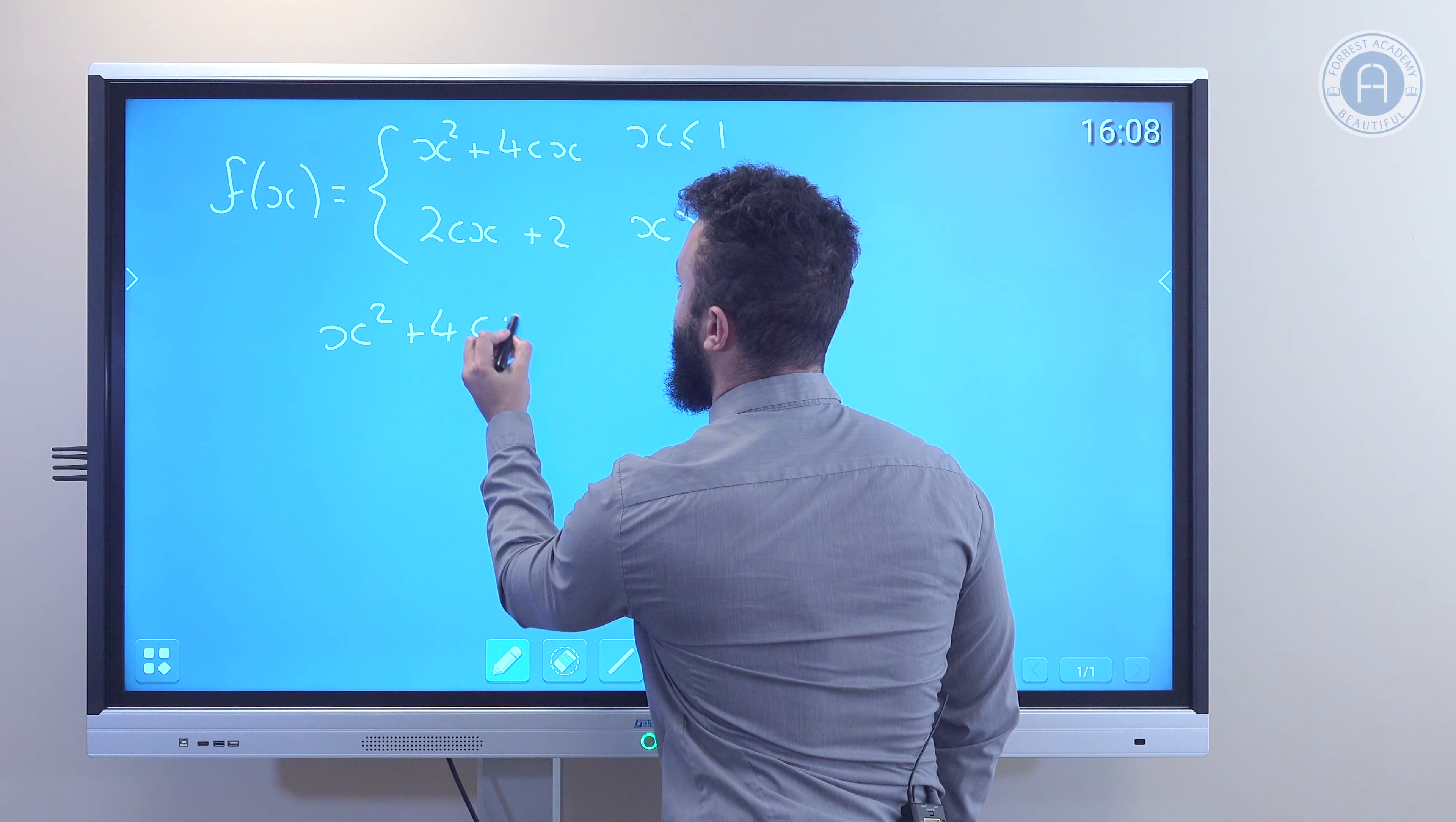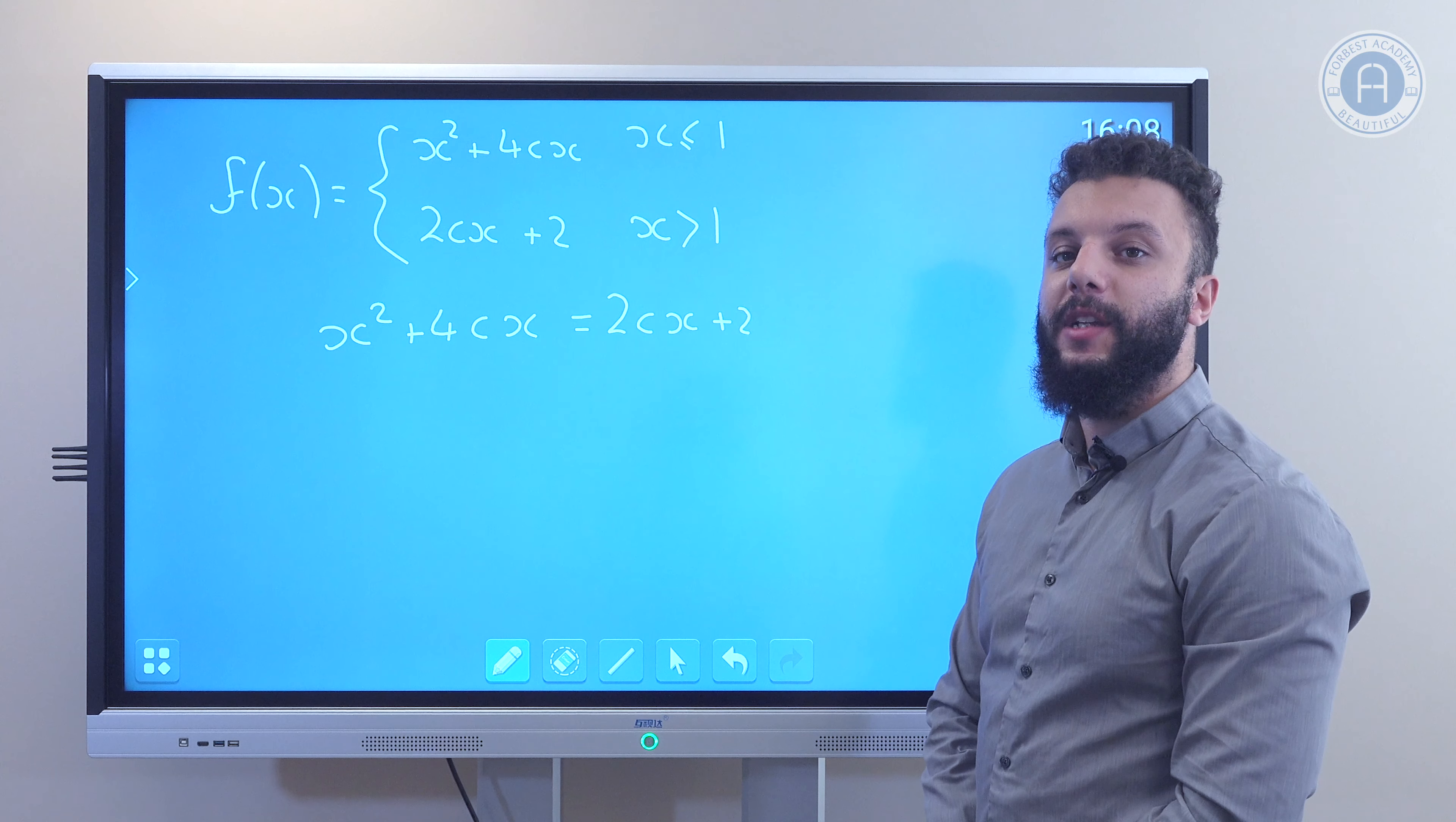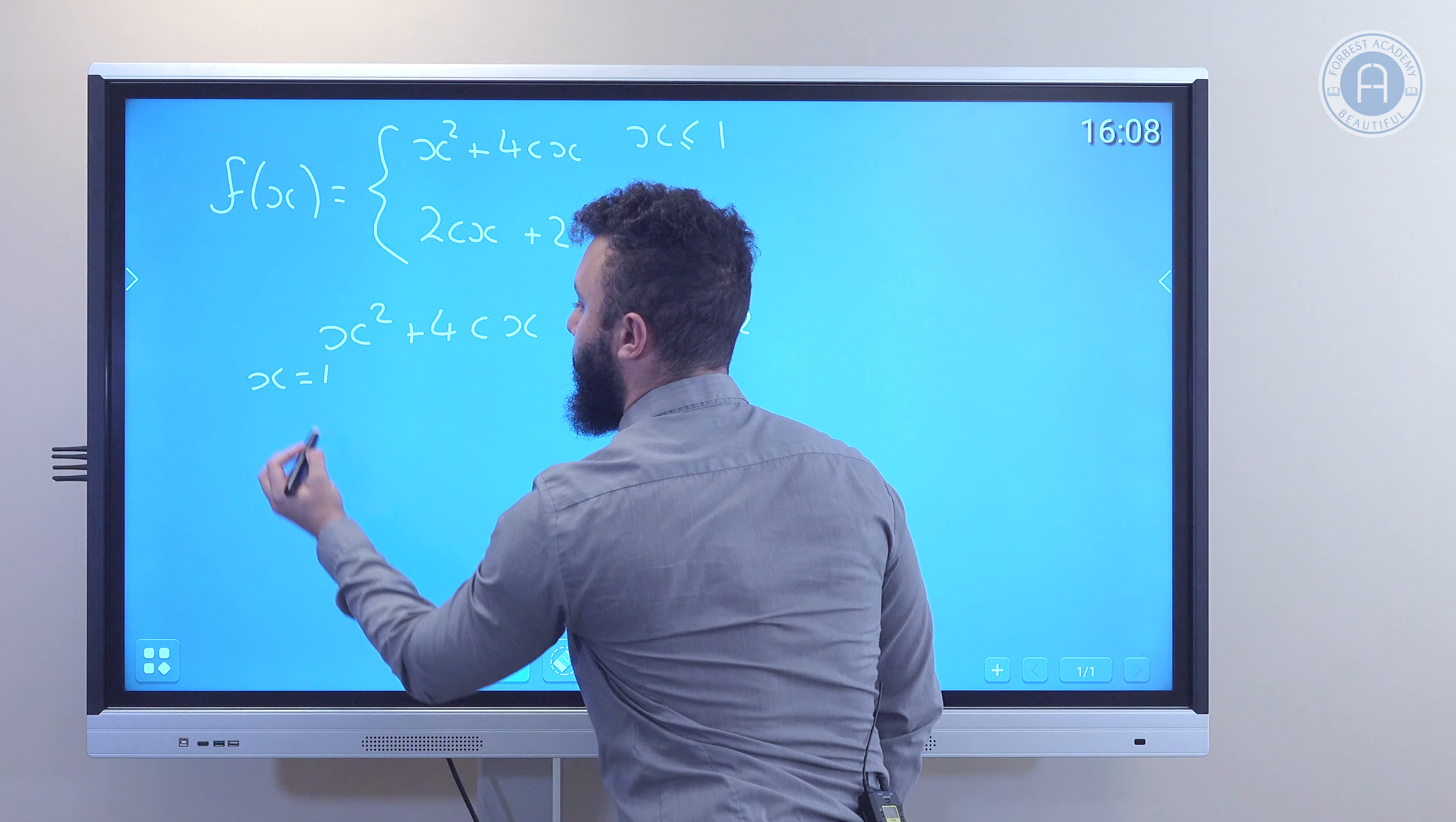So on the board we have a piecewise function. When x is less than or equal to 1, y is equal to x squared plus 4cx. And when x is greater than 1, y is equal to 2cx plus 2.